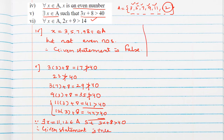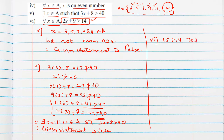Question 6: For all x belonging to A, 2x + 9 is greater than 14. Since 'for all' is used, all elements must satisfy the condition. For x = 3: 6 + 9 = 15 > 14, yes. For x = 5: 10 + 9 = 19 > 14, yes. Since the lowest number satisfies it, all others will too. Therefore the given statement is true.